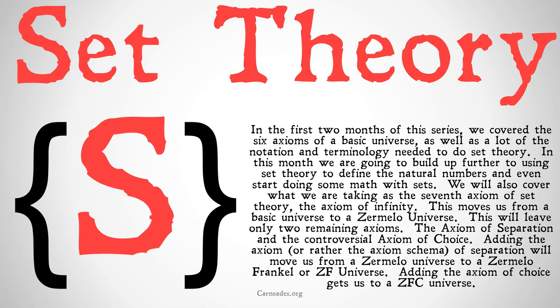The axiom of infinity is going to move us from our basic universe, with the first six axioms, to a Zermelo universe. This will leave only two remaining axioms to cover: the axiom of separation and the controversial axiom of choice. Adding the axiom schema of separation will move us from a Zermelo universe to a Zermelo-Fraenkel universe, or ZF universe, and adding the axiom of choice gets us to a ZFC, Zermelo-Fraenkel with choice, universe.